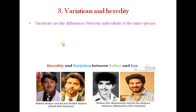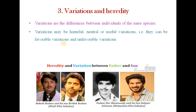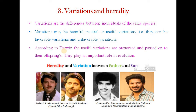There are variations and heredity among organisms. Variations are the differences between the individuals of the same species, and variations may be harmful, neutral, or useful — that is favorable or unfavorable. According to Darwin, the useful variations are preserved and passed on to the offsprings. They play an important role in evolution. Here is the diagrammatic representation of heredity and variation between father and son.